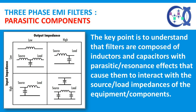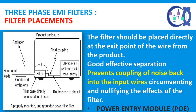The key point is to understand that filters are composed of inductors and capacitors with parasitic resonance effects that cause them to interact with the source and load impedances of the equipment components. The filter should be placed directly at the exit point of the wire from the product. Good effective separation is essential. The separation prevents coupling of noise back into the input wires, circumventing and nullifying the effects of the filter. This would be an excellent choice for an AC inlet mounted EMI filter or power entry module filter.